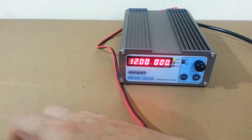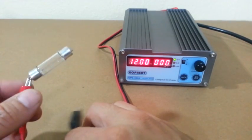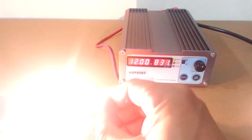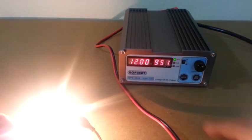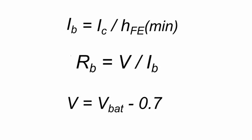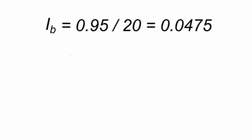In order to test the circuit, I am going to use this lamp, a 12 volt lamp, and the current is 950 milliamps or almost 1 amp. Let's calculate the value of the base resistor. First, the base current is equal to 0.95 amps divided by the minimum current gain of our transistor, that is 20.